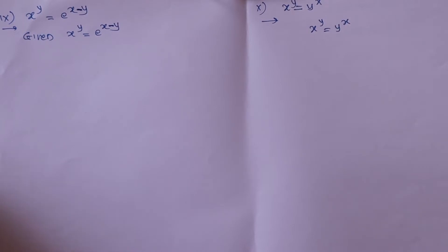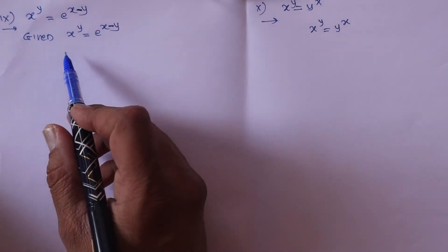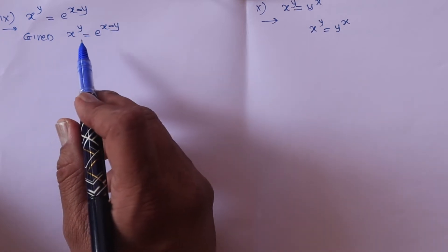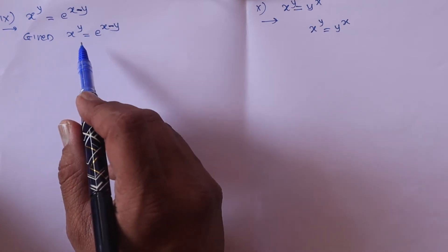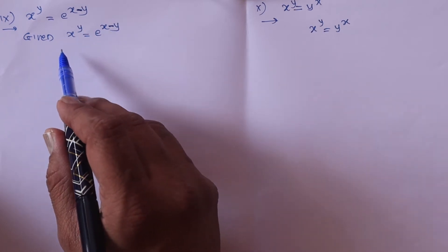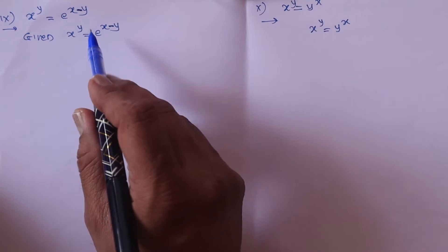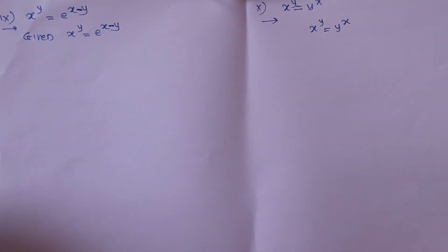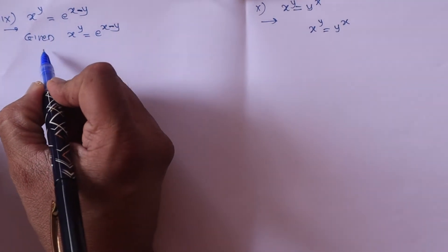Hello friends, we are going to start a new example: x raised to y is equal to e raised to x minus y. This is an implicit function. For simplification, we should apply logarithm on both sides. Without applying logarithm we could not solve it, so we take the logarithm.